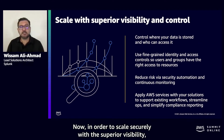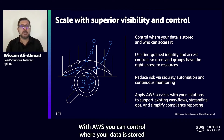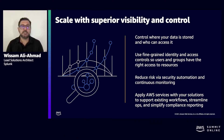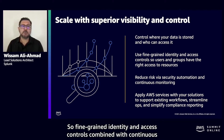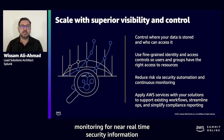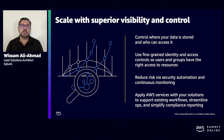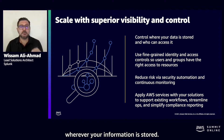In order to scale securely with superior visibility, with AWS you can control where your data is stored and who can access it, and what resources your organization is consuming at any given moment. Fine-grained identity and access controls combined with continuous monitoring for near real-time security information ensures that the right resources have the right access at all times, wherever your information is stored.